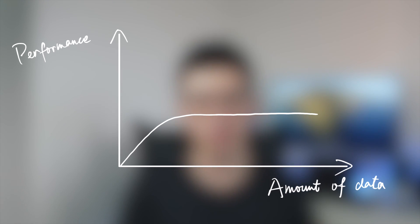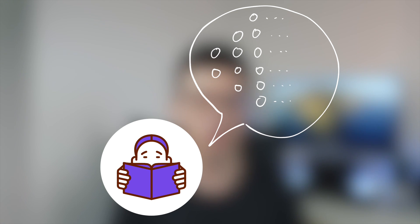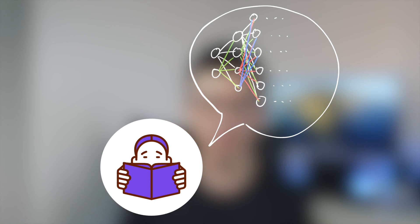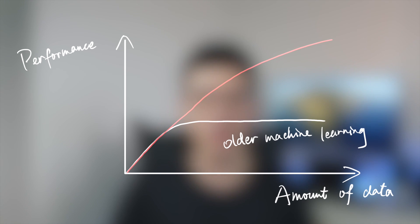When the data reaches a certain amount, the performance of the model stops improving, while it's still far from perfect. That is why deep learning comes into play. Deep learning is inspired by the human brain — it uses large neural network architectures and is fed with far more data than classical machine learning. Unlike classical machine learning models, as we construct larger neural networks and train them with more and more data, their performance continues to increase. You probably have questions: what is a neural network? What is the inner structure of deep learning models?